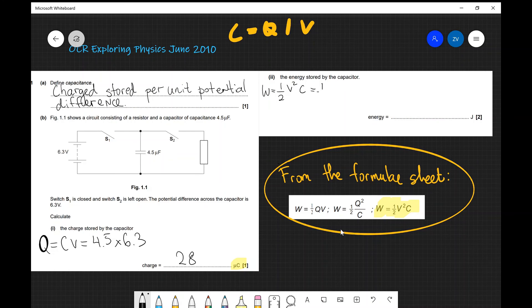Now, our voltage is 6.3 volts. So let's square that. Don't forget the square, guys. It's very easy just to forget a square here or there in an exam question. And that can cost you a mark. Multiply by the capacitance, which is 4.5 microfarads.